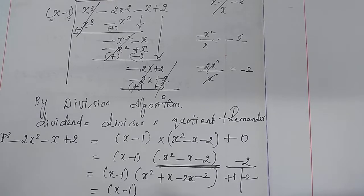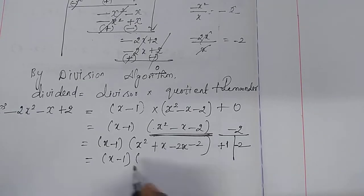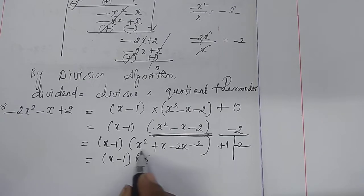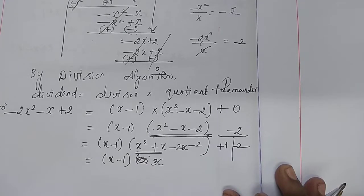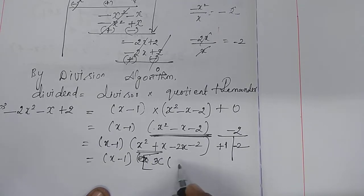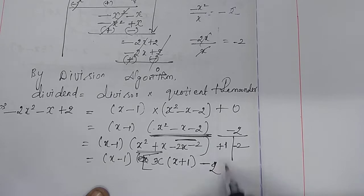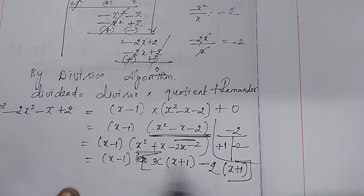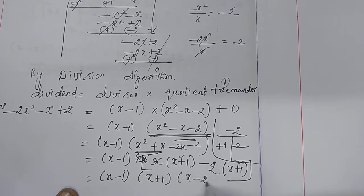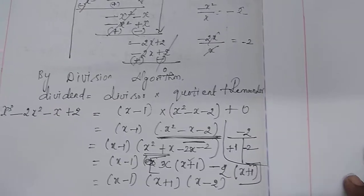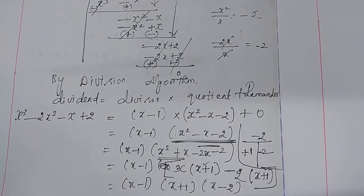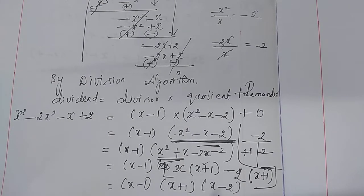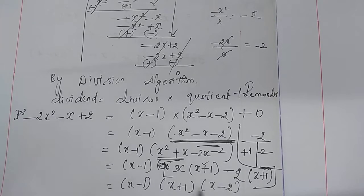This equals x minus 1 into the factored quadratic. From the first two terms, take x as common — we get x into bracket x plus 1. From the last two terms, minus 2 is common — we get minus 2 into bracket x plus 1. Now, x plus 1 is common, so take it outside. The remaining inside the bracket is x minus 2. So the complete factorization is x minus 1 into x plus 1 into x minus 2. Our dividend has degree 3, therefore we get 3 factors: x minus 1, x plus 1, and x minus 2. These three terms are the factors of the given polynomial.